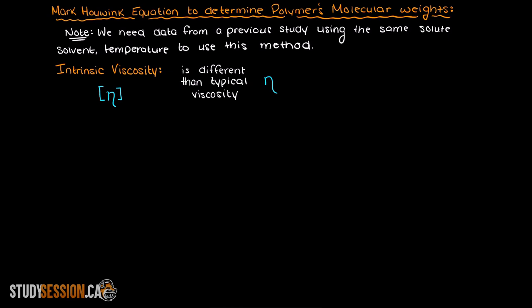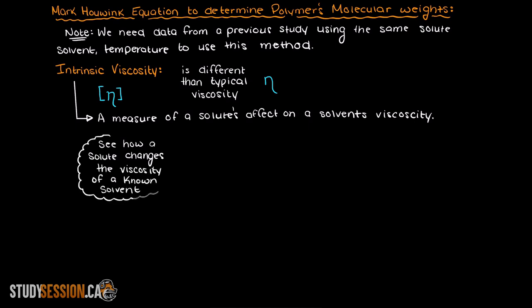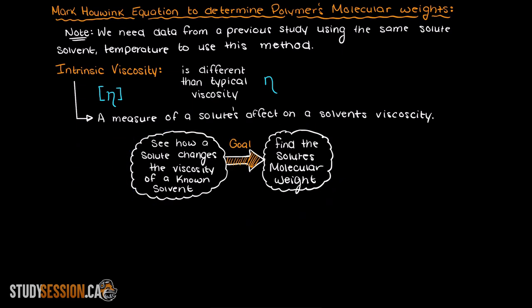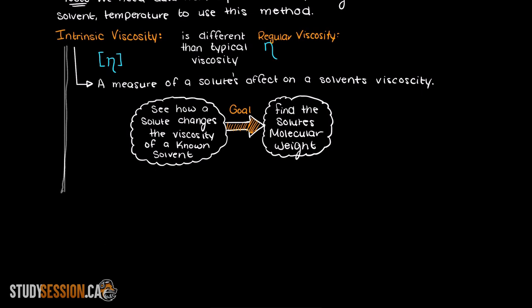So what is the intrinsic viscosity? The intrinsic viscosity is a measure of a given solute's effect on a certain solution's viscosity. So we are trying to find a polymer's molecular weight by seeing how it changes the viscosity of a known solvent. Mathematically, the intrinsic viscosity is represented using the following equation, we have the limit as the concentration goes to zero of a specific viscosity over the concentration.